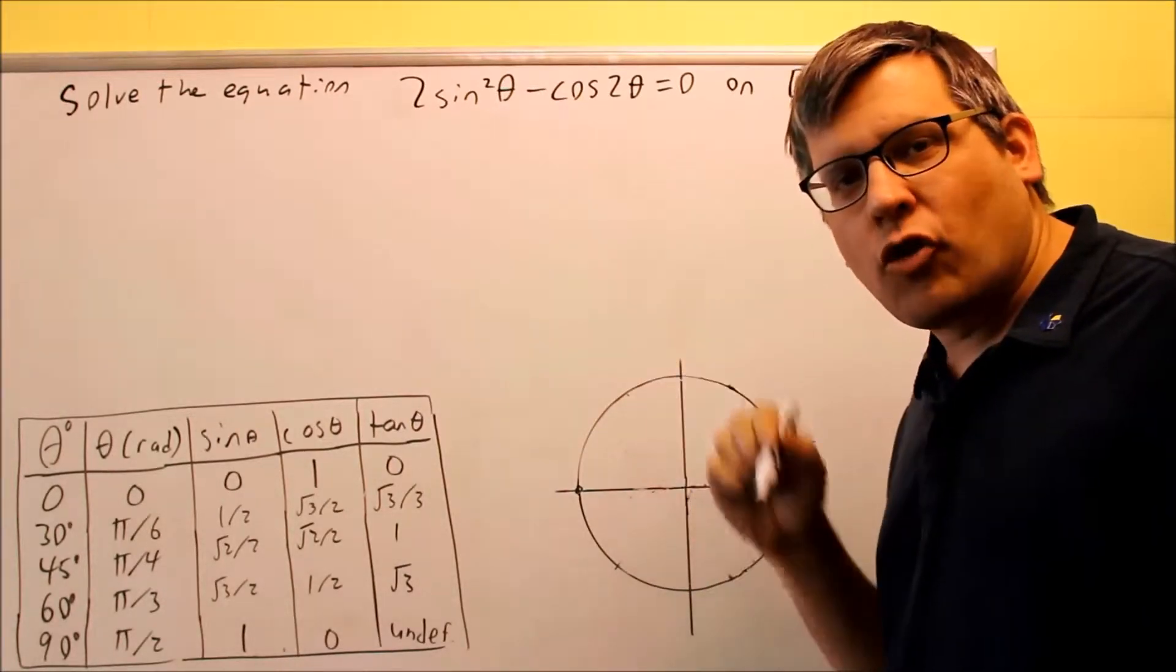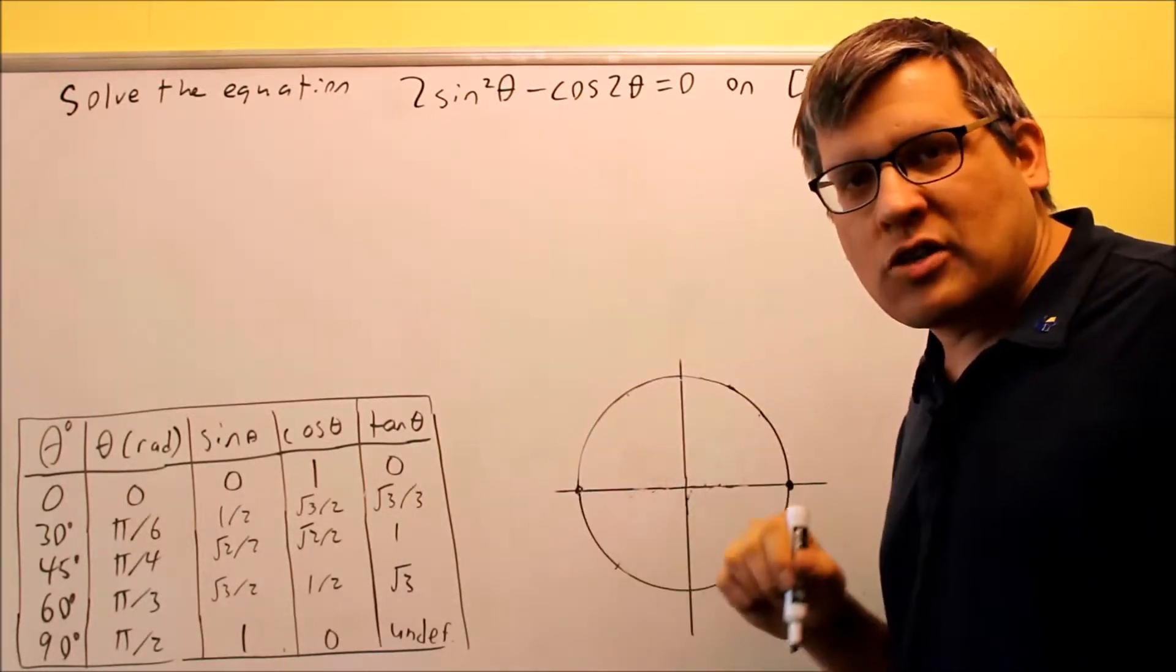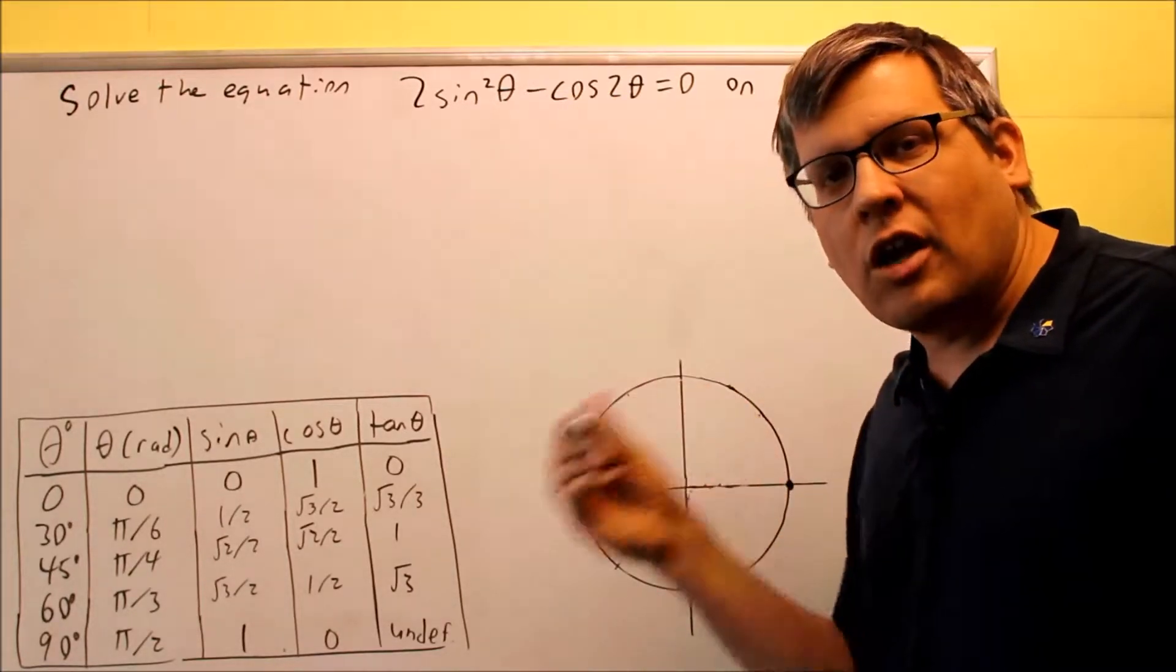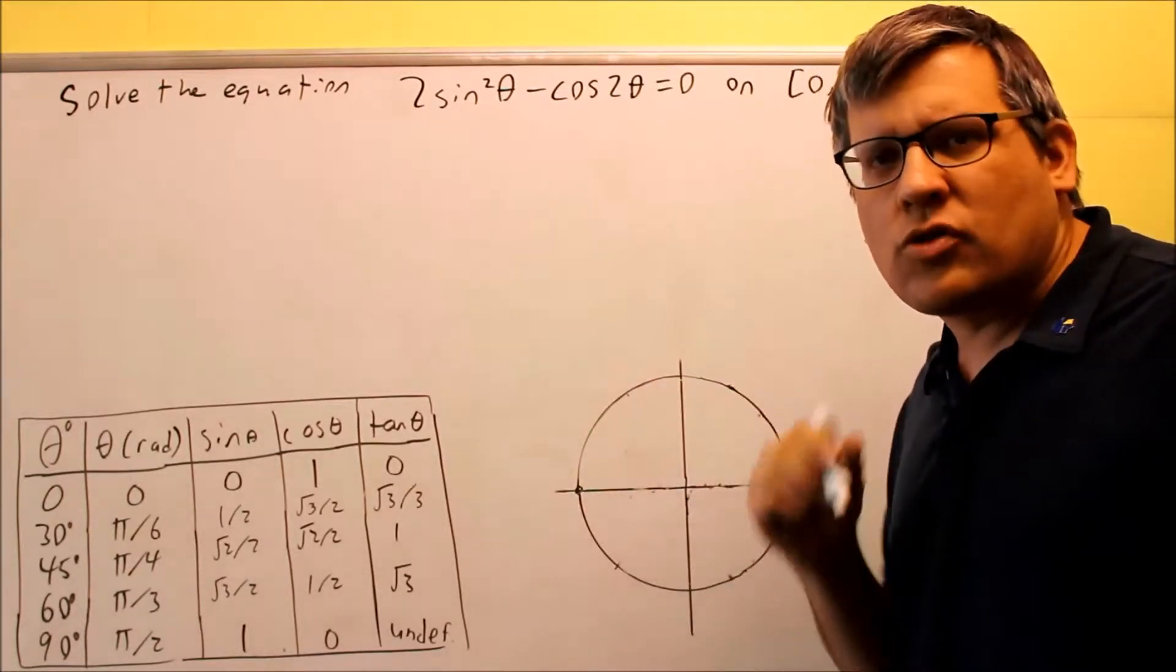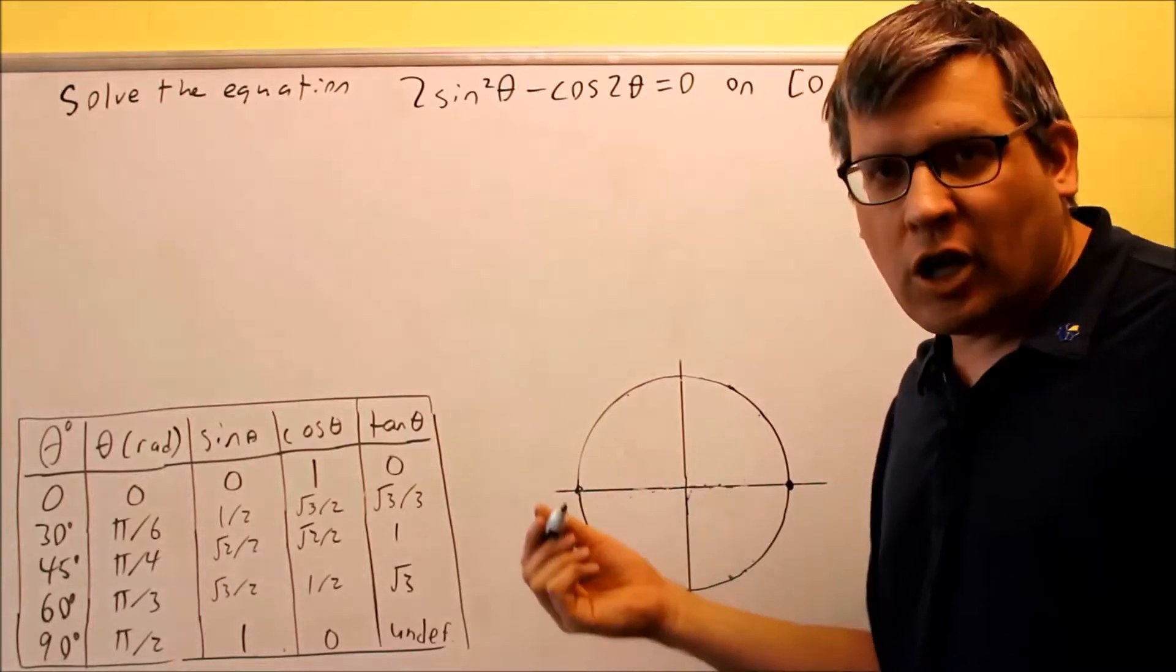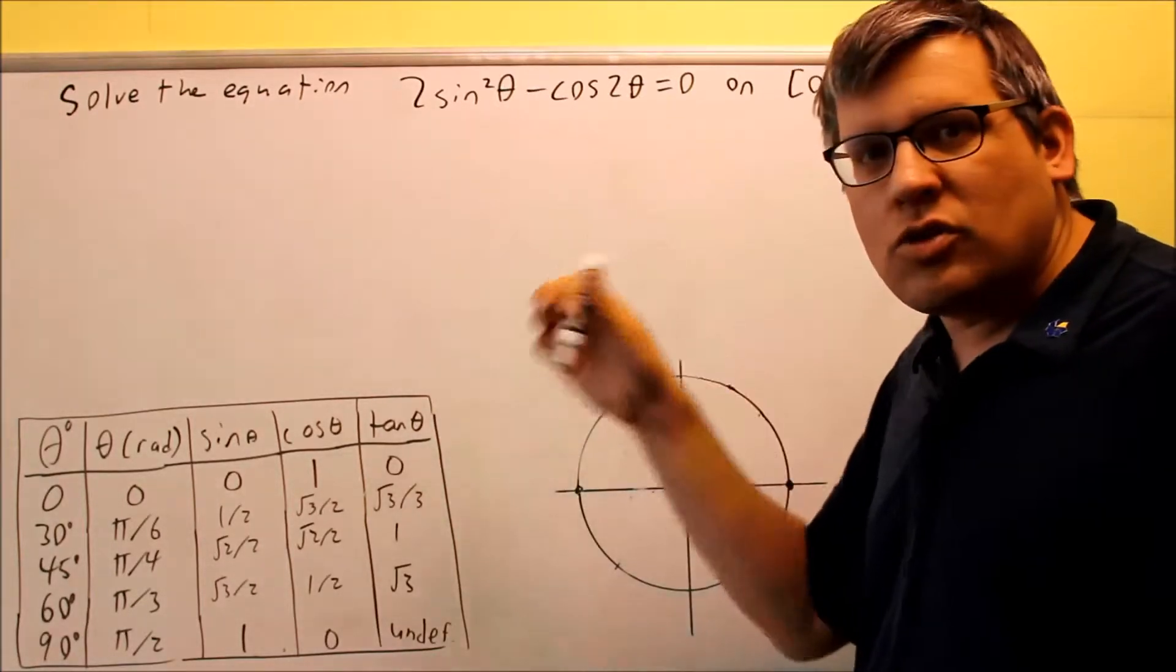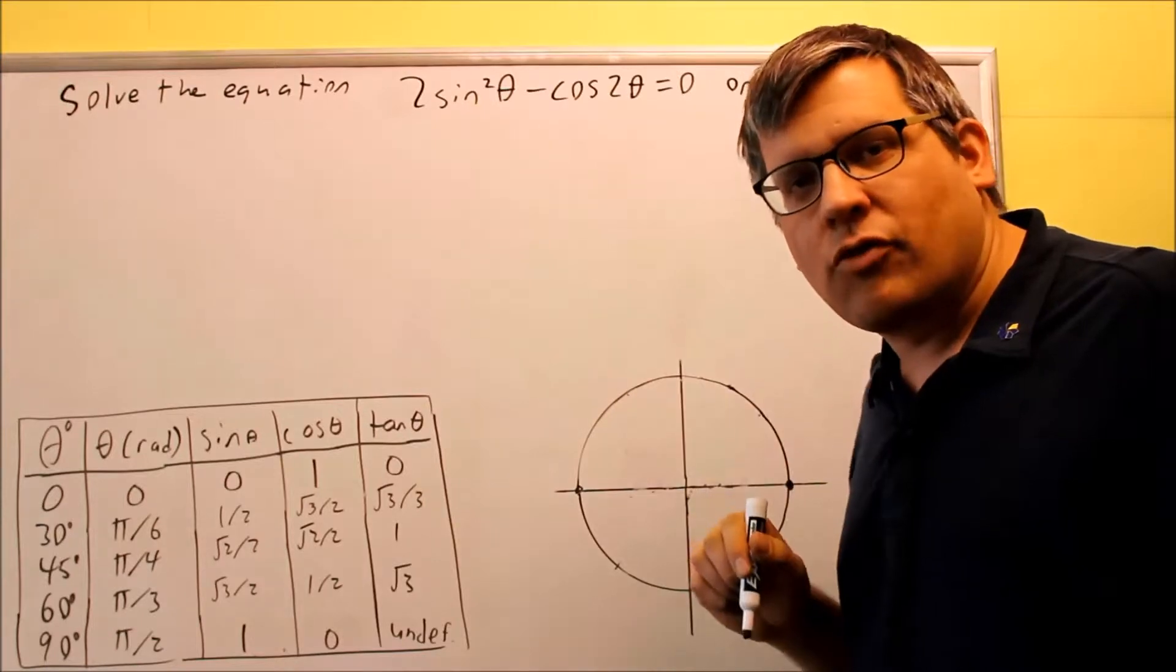The first formula, cosine squared minus sine squared, is not a good choice because we'll end up with a cosine squared we can't do anything with. Then we have two cosine squared minus one. That won't help us either because we don't want two trig functions, we only want one trig function.